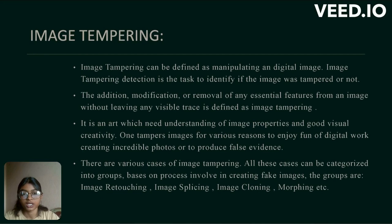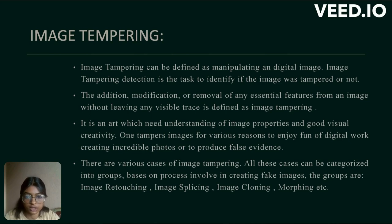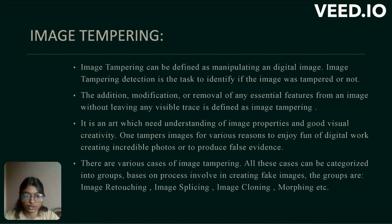What is image tampering? Image tampering can be defined as manipulating a digital image. Image tampering detection is the task to identify if the image was tampered or not. The addition, modification or removal of any essential features from an image without leaving any visual trace is defined as image tampering. It is an art which needs understanding of image properties and good visual creativity. One tampers an image for various reasons: to enjoy the fun of digital work, creating incredible photos, or to produce false evidence.